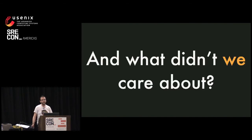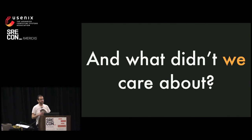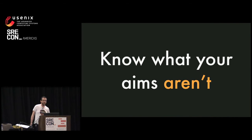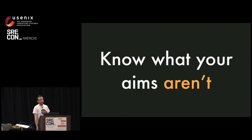So what didn't we care about? I think this is really important in any project — to define what your non-aims are. What are you not going to do? It's super easy to get distracted when you start a project and haven't said 'we're excluding these things.' If you can define what you're not doing, you'll avoid distractions.